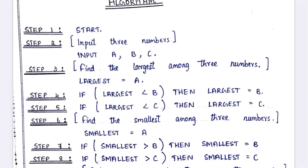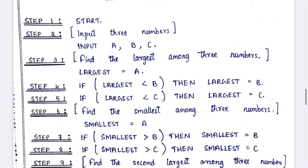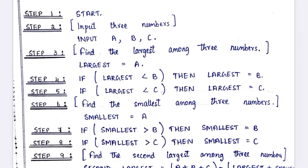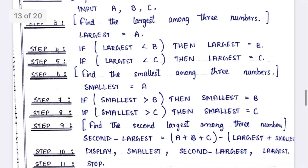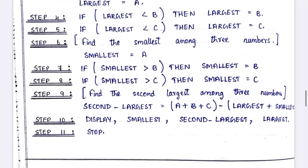Step 4: if largest is less than b, then b is largest — it means that if a is smaller than b, then obviously b is largest, so we assign b as largest. In the next step 5, we see if largest is less than c — we compare with c, and if a is smaller than c, then c is the largest.